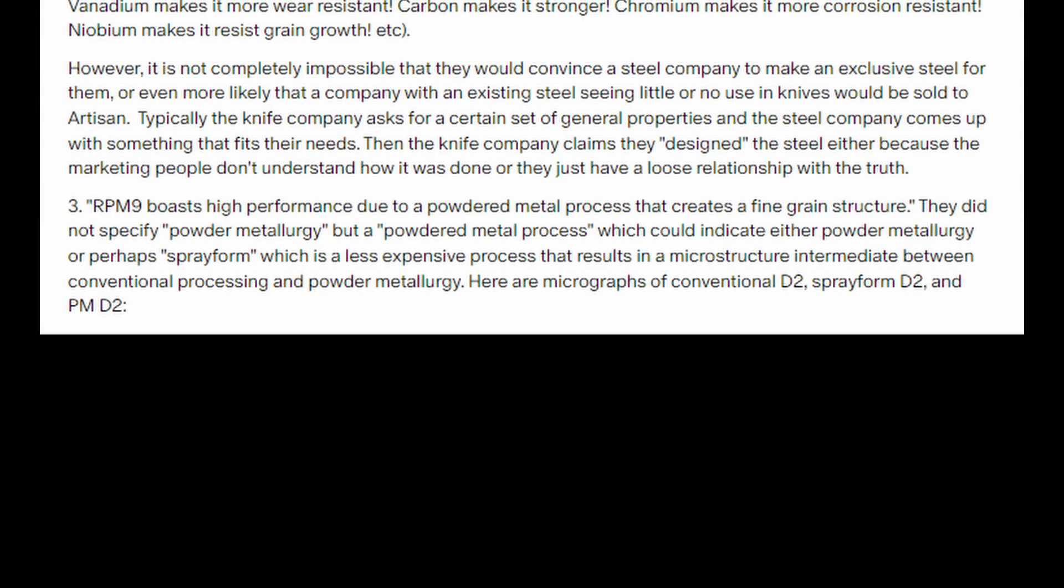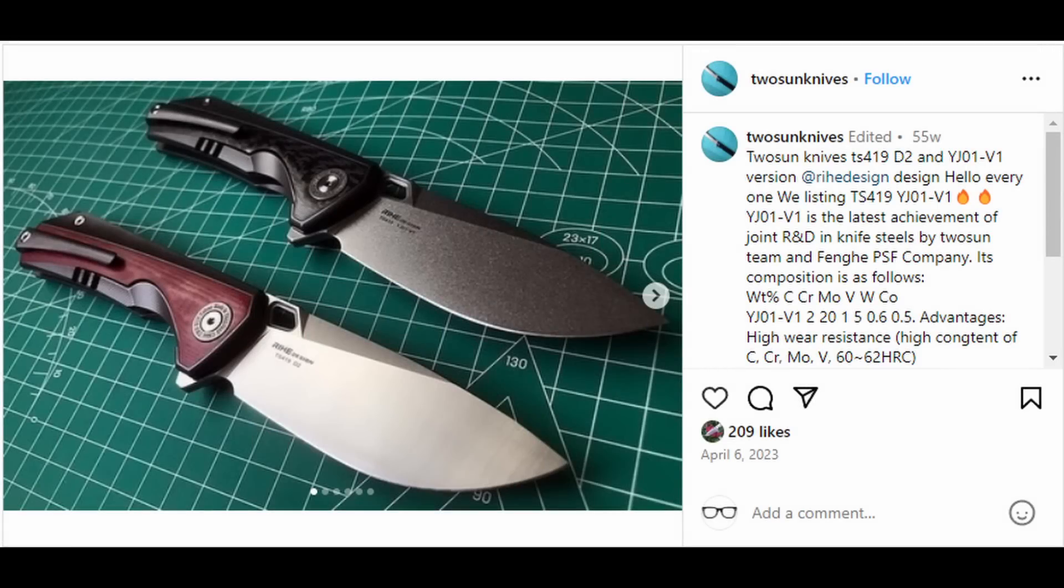Another thing I thought in that original Patreon article I had about the steel is I proposed that it might be spray form. And since the release of AR-RPM9, Tucson knives, they've come out with some knives in their proprietary steel called YJ01V1, which is a spray form version of a slightly modified M390. And that steel is made by Foshan Fenghei, I'm sure I pronounced that perfectly. Or not. Anyway, what is spray form?